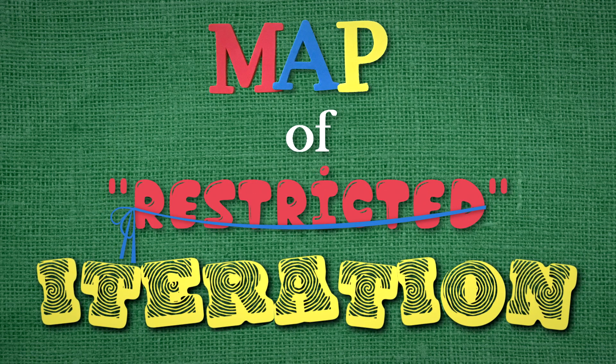The Mandelbrot set, in simplest terms, is a map that shows areas of restricted iteration on the complex plane.